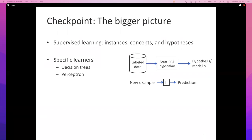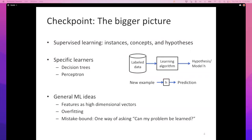We've also seen the idea of instances being represented in high-dimensional spaces as feature vectors — hopefully you're getting comfortable with that. In your homework you have something like 38 diamond features, so whether you like it or not, you're working in a 38-dimensional space. I encourage you not to try to imagine a 38-dimensional space, because that's just a way to get a headache, but you are working with high-dimensional features.